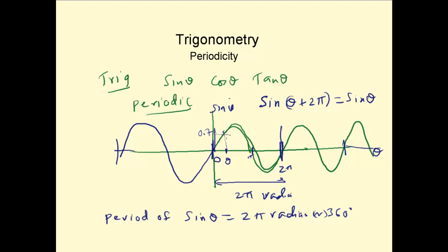Let's add 2π to θ. Adding 2π to θ is 2π plus θ. So we go one cycle more, from here to here. This is 2π. From here to here is 2π. At 2π, again you can note that it's still 0.7. So sin of θ plus 2π is sin θ.